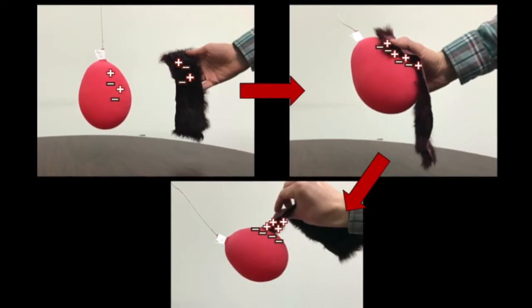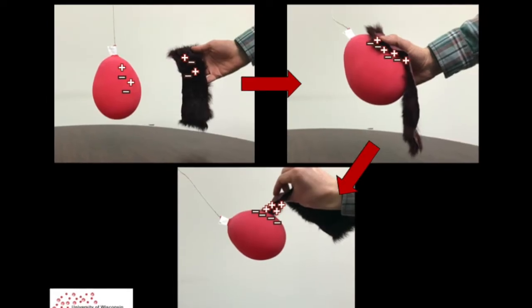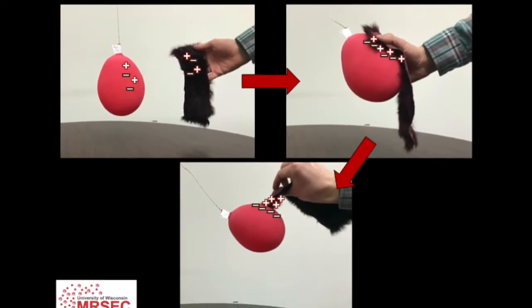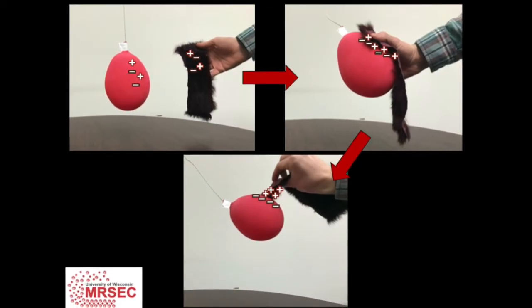When the materials separate, one of them now has more positive charge and the other has more negative charge. If you've ever walked across carpet while wearing socks and then shocked yourself on a doorknob, you've encountered one of the ways those charges can rebalance themselves.